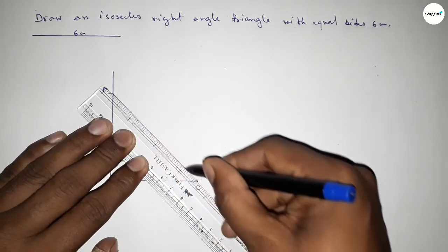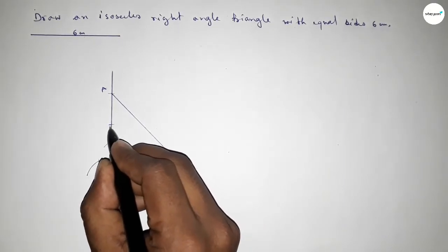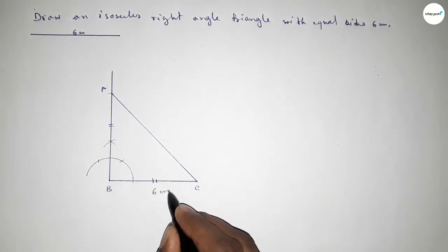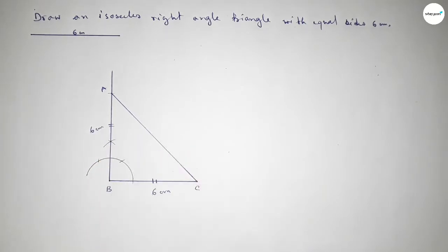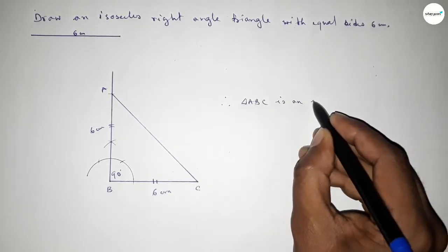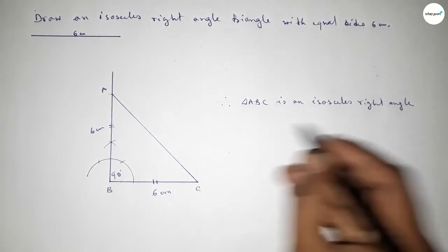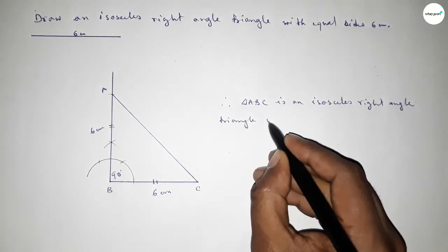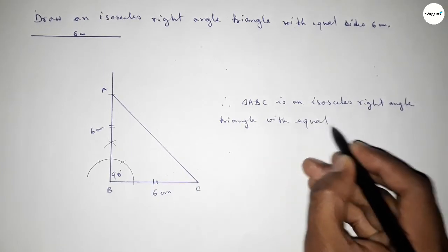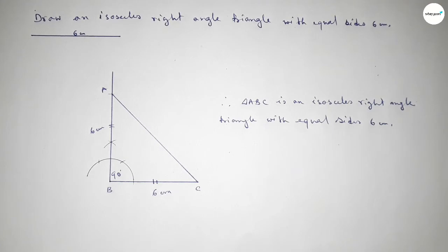Joining this side — this side and this side are equal: this is 6 centimeters and this one is also 6 centimeters, and this is a 90-degree angle. Therefore, triangle ABC is an isosceles right angle triangle with two equal sides of 6 centimeters. That's all, thanks for watching.